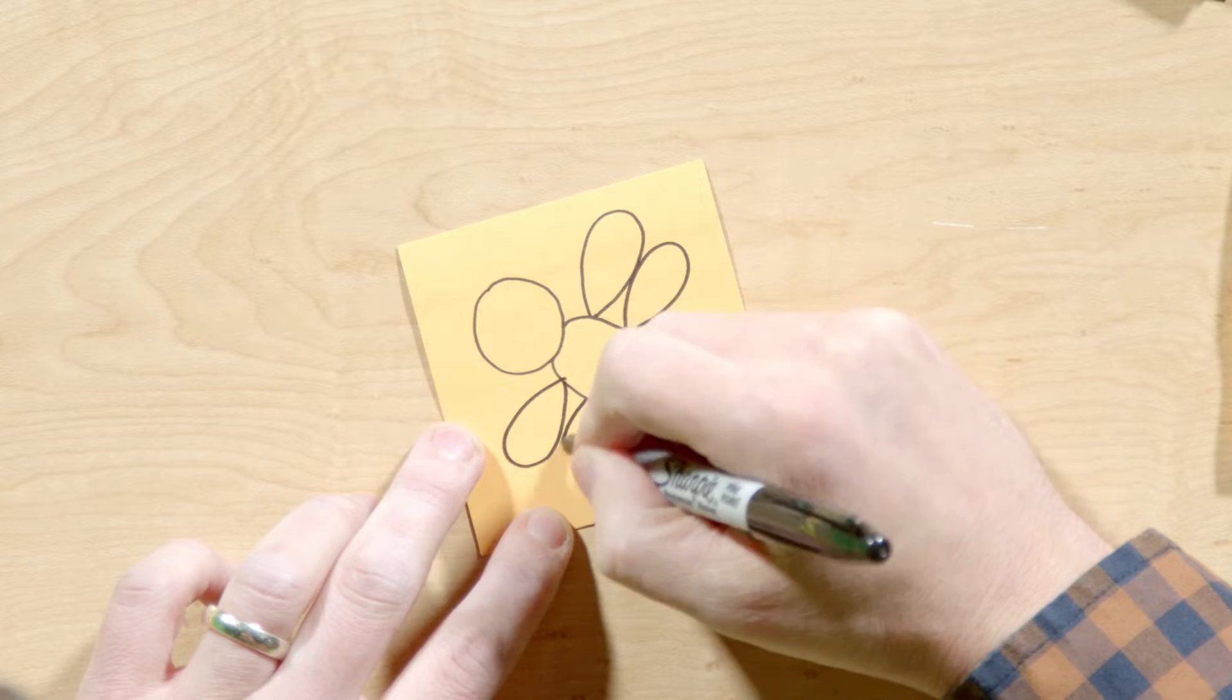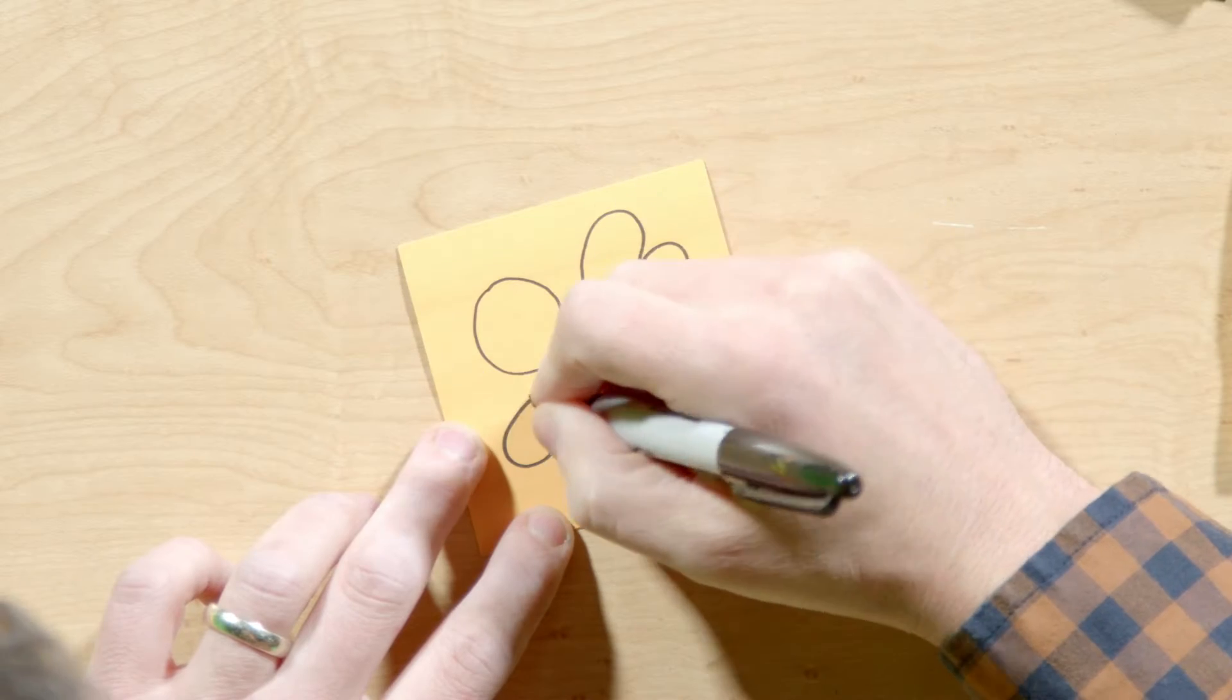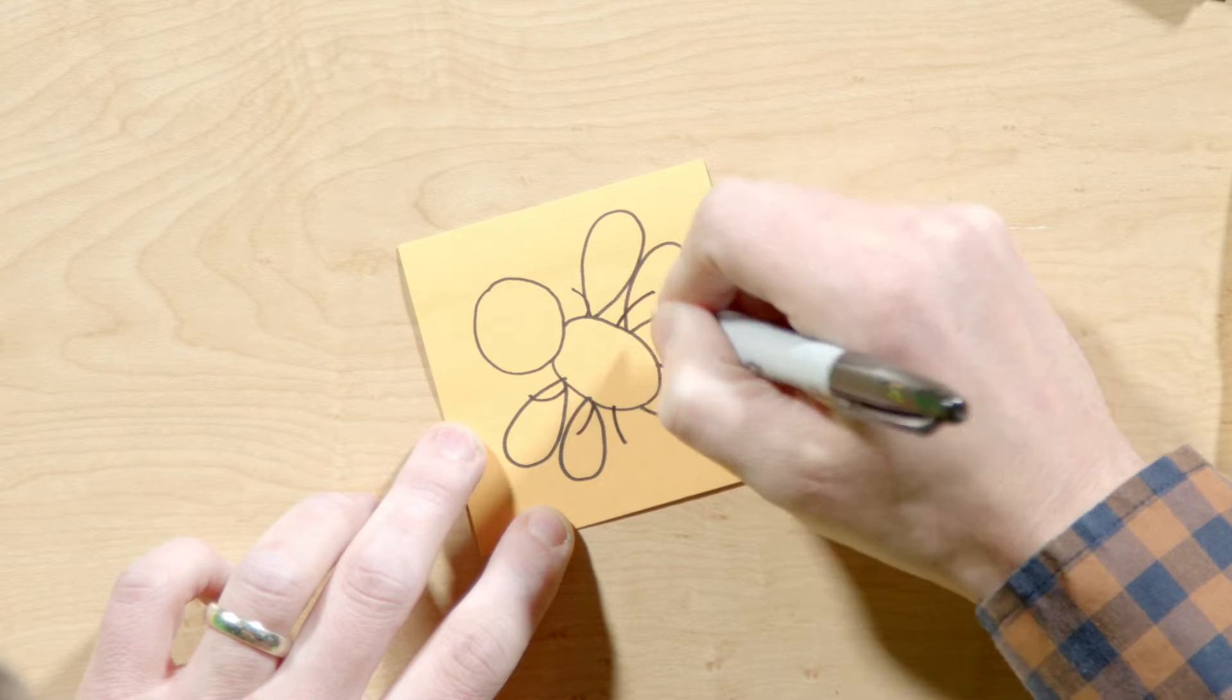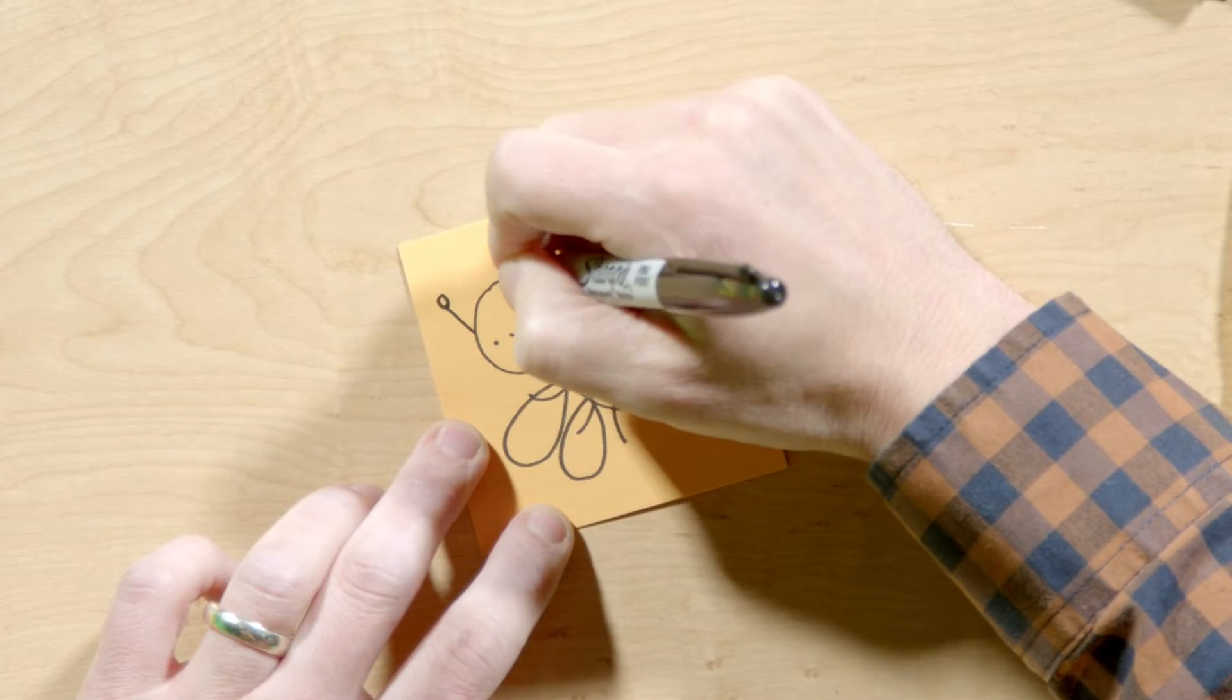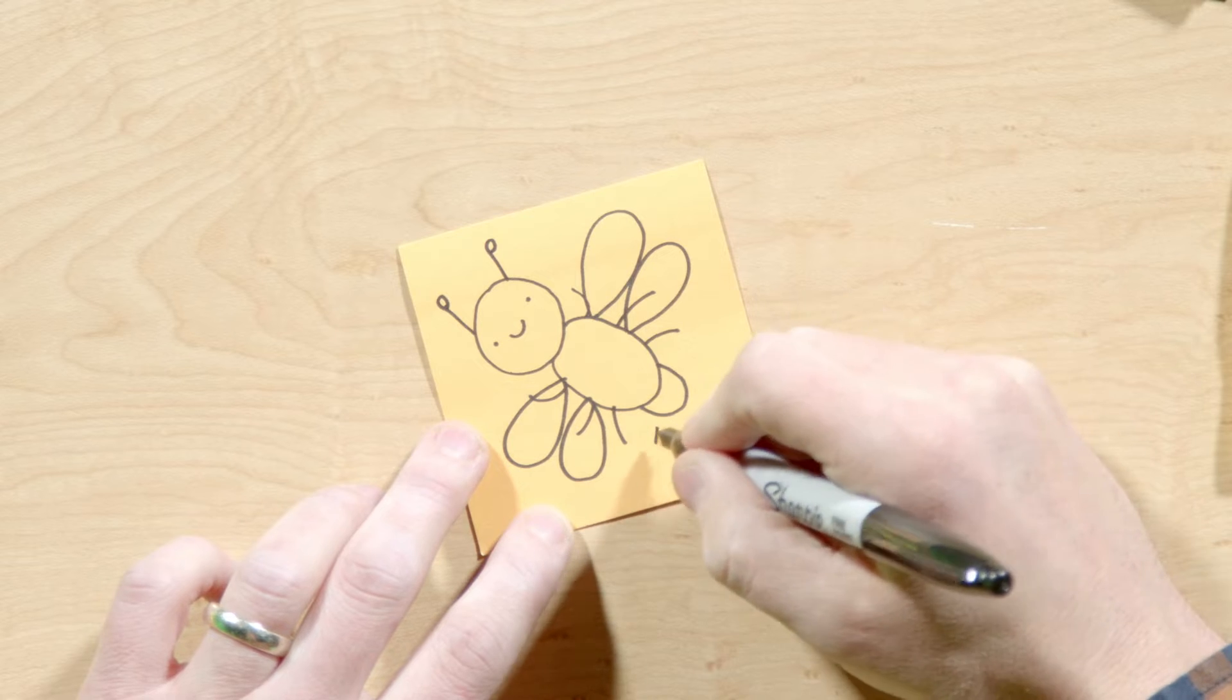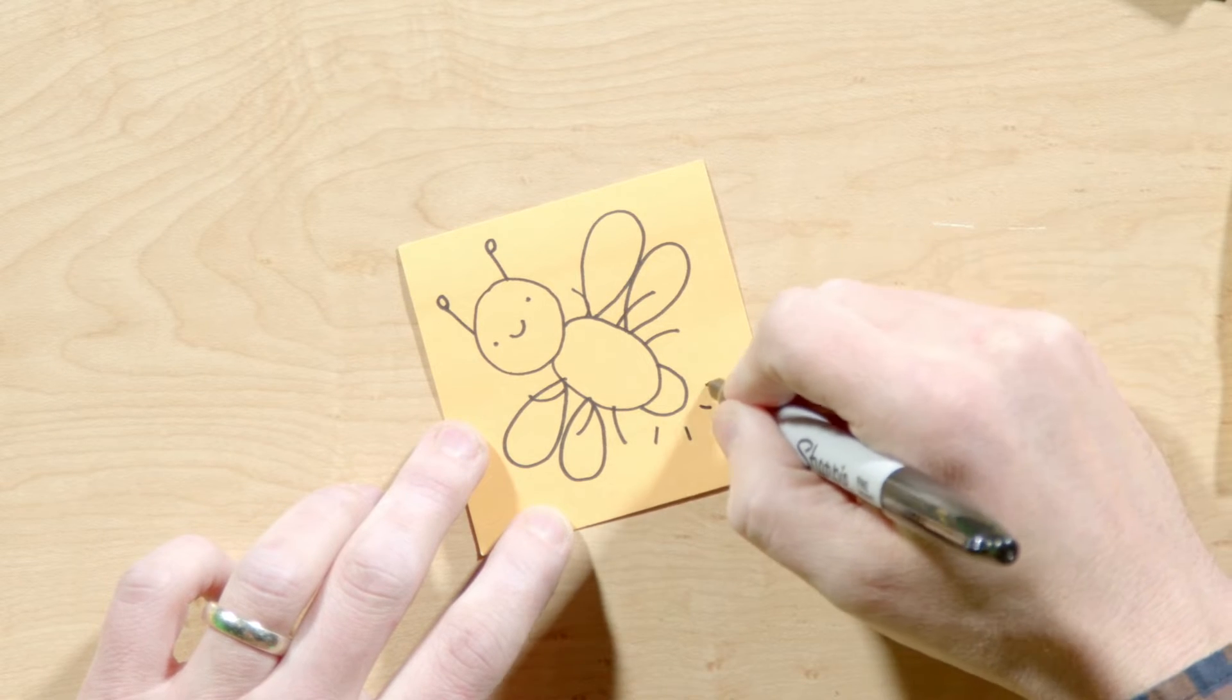All right. And legs, we definitely need legs. There they are. And a face. Antennas, can't forget those. And we've got to light it up. It's a lightning bug. There we go.